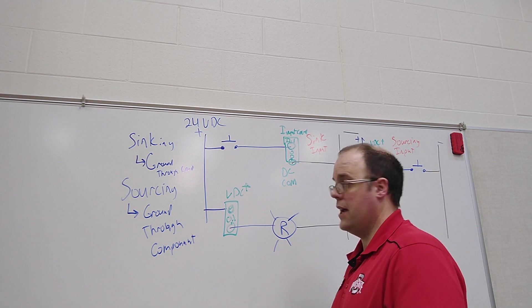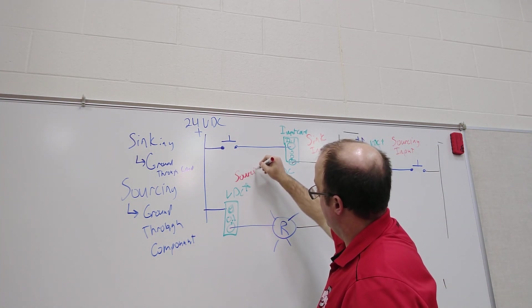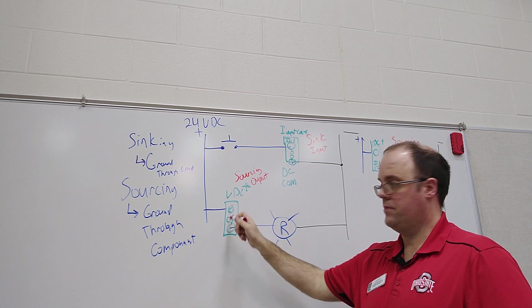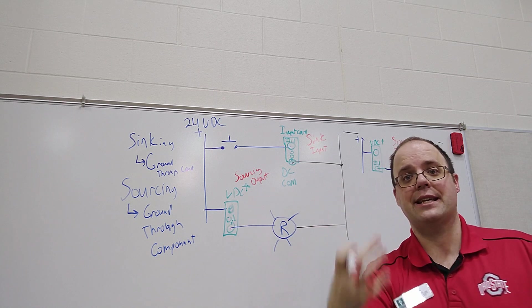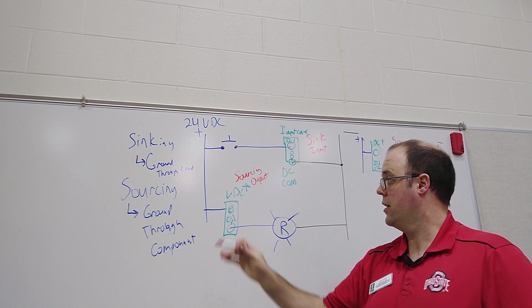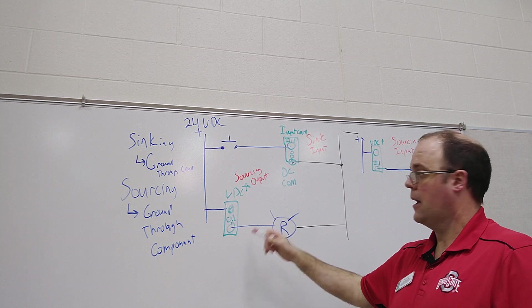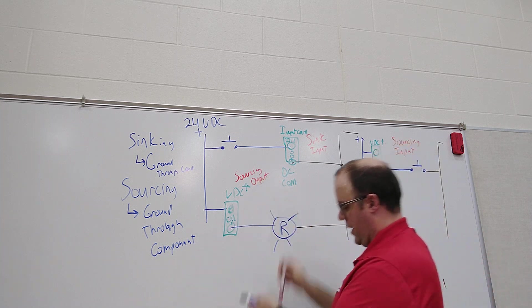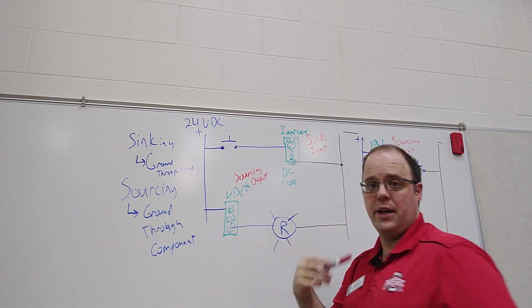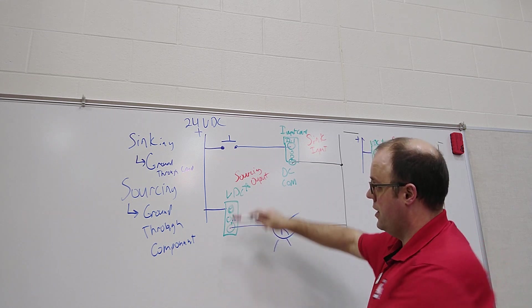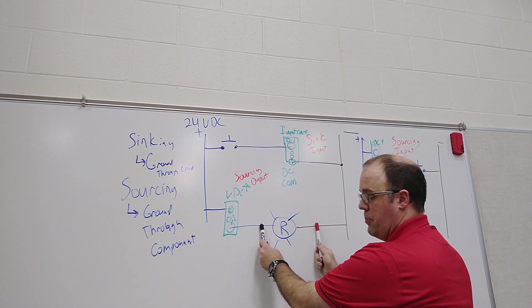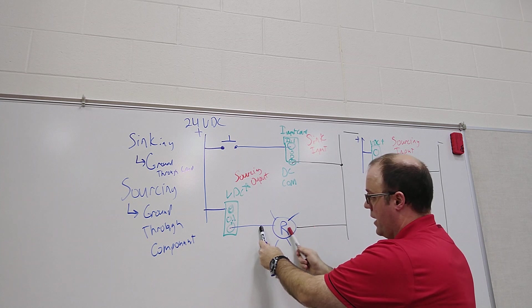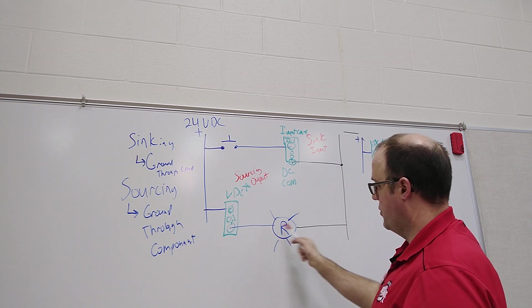This is considered a sourcing output, because I'm supplying power to here and then when the logic dictates it flips on the switch inside the output card and that sends power to the red light. So if I go from here to here, if the output is not on, if I go from a voltmeter from here to here it's going to give me 24 volts. If the output is on it will give me zero. Same is true right here. If the output is not on and the light is not on that will give me zero volts. But if the light is on because the output is on it's going to give me 24, because of the voltage drop right there.